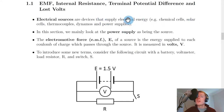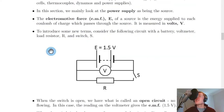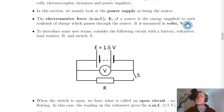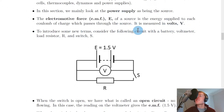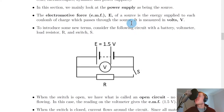In this section we'll mainly focus on the power supply — in other words, a battery or cell — as being the source. The electromotive force, or EMF, given the symbol capital E, is the energy supplied to each coulomb of charge which passes through the source. It is measured in volts.